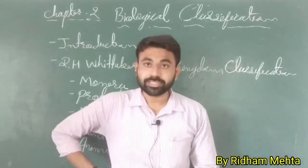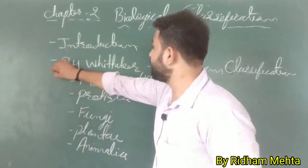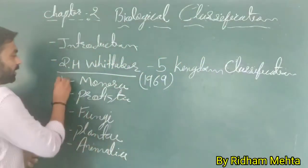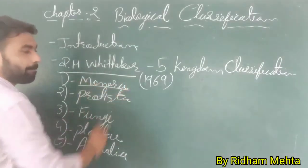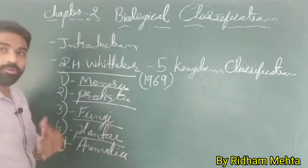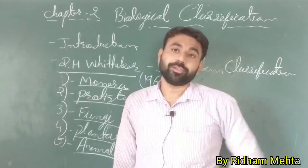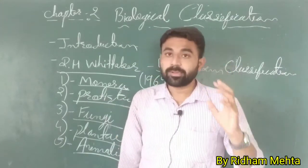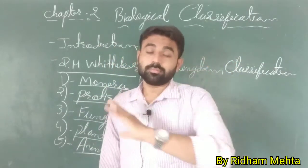When Whittaker's classification came, the scenario changed. He classified different organisms into five kingdoms: first, Monera; second, Protista; third, Fungi; fourth, Plantae; and fifth, Animalia. This five kingdom classification is very famous and considered highly reliable. Bacteria, cyanobacteria, and blue-green algae, which were all previously in the plant kingdom, were now reorganized.